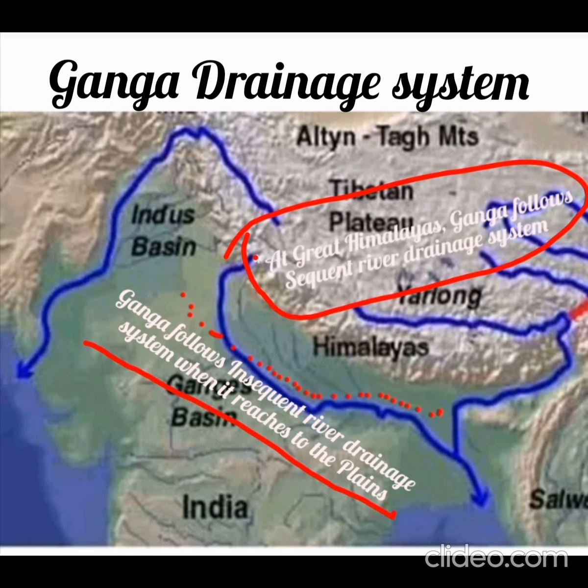Which drainage system does Ganga follow? Actually, Ganga is both a sequent river and an insequent river. Or more precisely, Ganga is both a consequent river and an antecedent river.